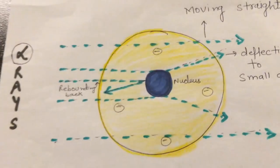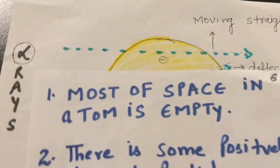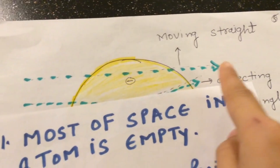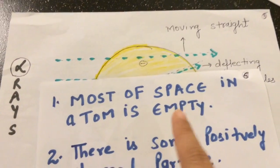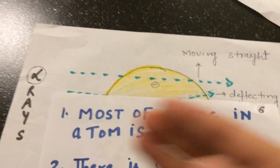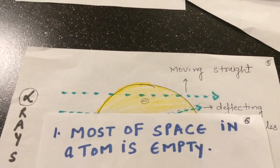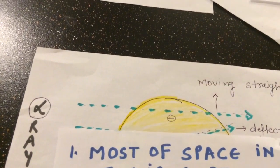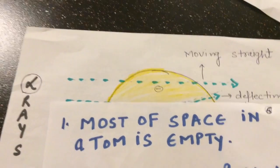From these observations, the following conclusions were drawn. Conclusion one: most of the alpha particles passed straight without any deflection, which means most of the space in the atom is empty. There was no obstacle in the atom, so most of the space in the atom is empty.